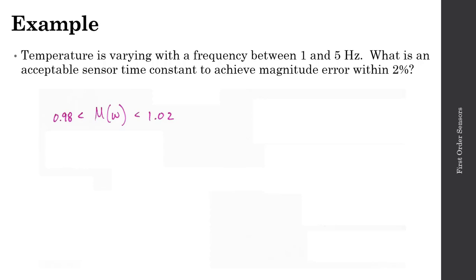It's important to note that for a first-order system, the magnitude ratio is always less than or equal to 1 — the maximum is 1, or 0 dB. So what we're effectively saying is that the magnitude ratio needs to be greater than 0.98. We rewrite this as: 0.98 is less than 1 over the square root of 1 plus the quantity omega times tau squared, where tau is the time constant of the sensor — and that is what we're solving for.